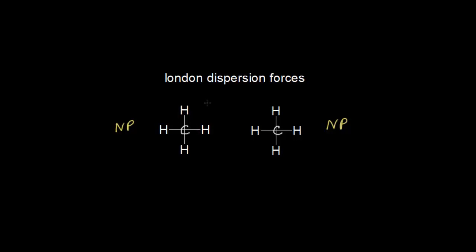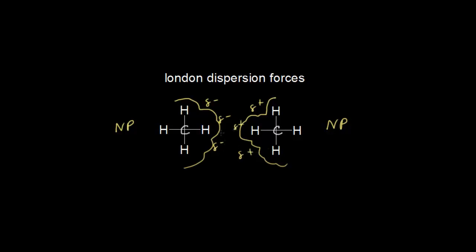Think about the electrons in these bonds moving in their orbitals. At a brief transient moment in time, you might get a little bit of negative charge on one side of the molecule — a net negative charge on that side. For the other molecule, the electrons could be moving in the opposite direction, giving it a partial positive. So there could be a very, very small attraction between these two methane molecules. It's very weak, which is why London dispersion forces are the weakest intermolecular forces, but it is there and it's the only thing holding these methane molecules together.